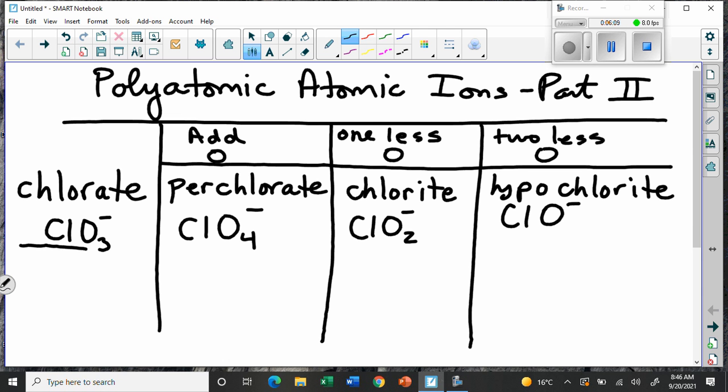So we have chlorate, which is the standard version of the polyatomic ion. Then we have perchlorate with an extra oxygen. We have chlorite with one less, and we have hypochlorite with two less. And that's sort of the pattern that we use. However, you can't memorize that anything with a two is an ite. It doesn't work that way. All that means is one less than the original chlorate over here. So you still have to memorize the starting point.